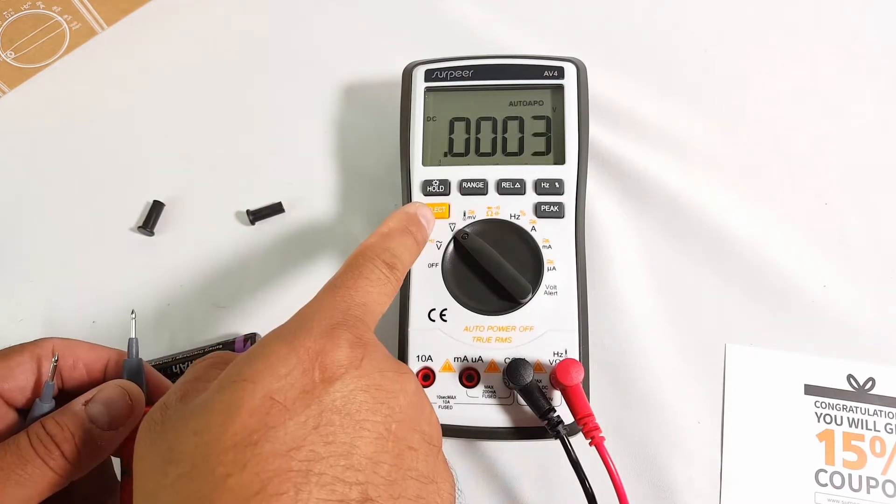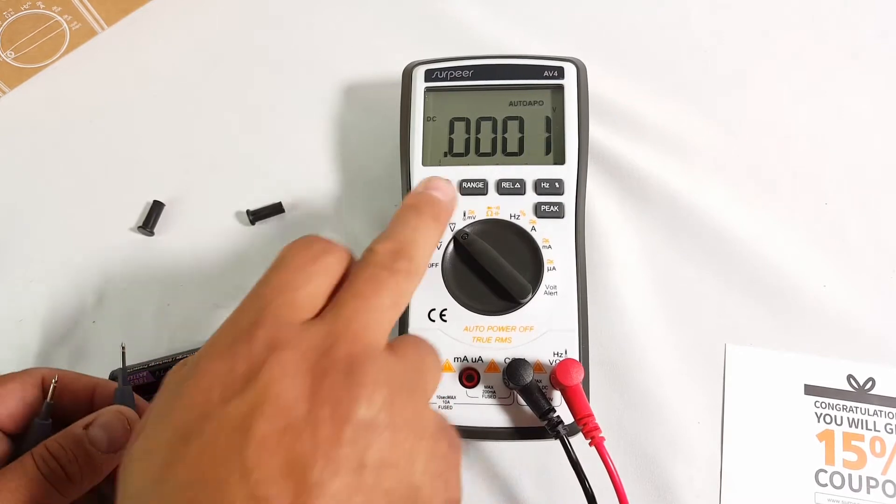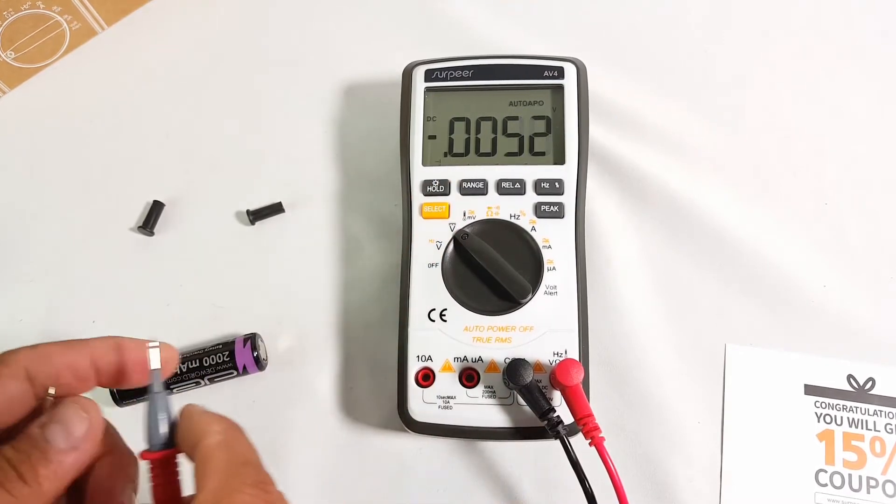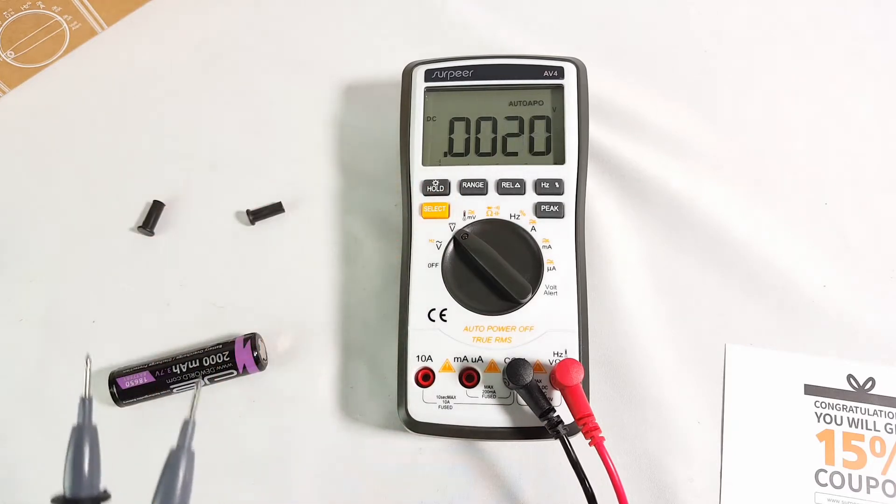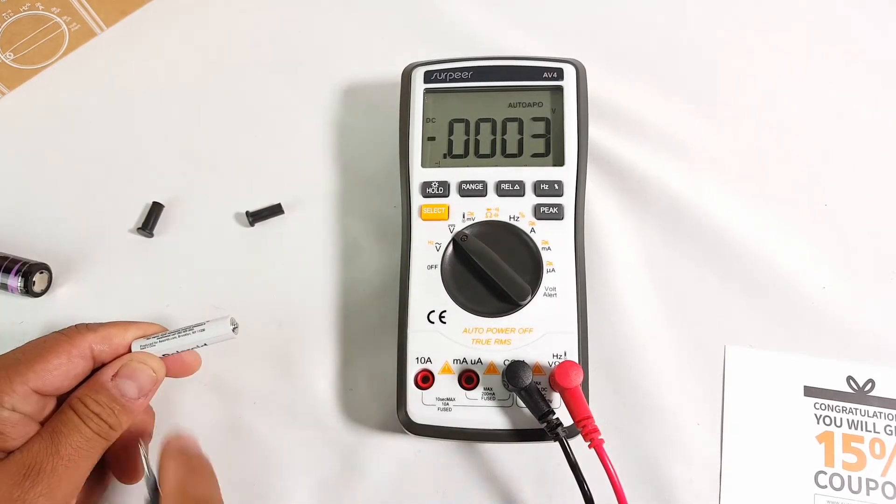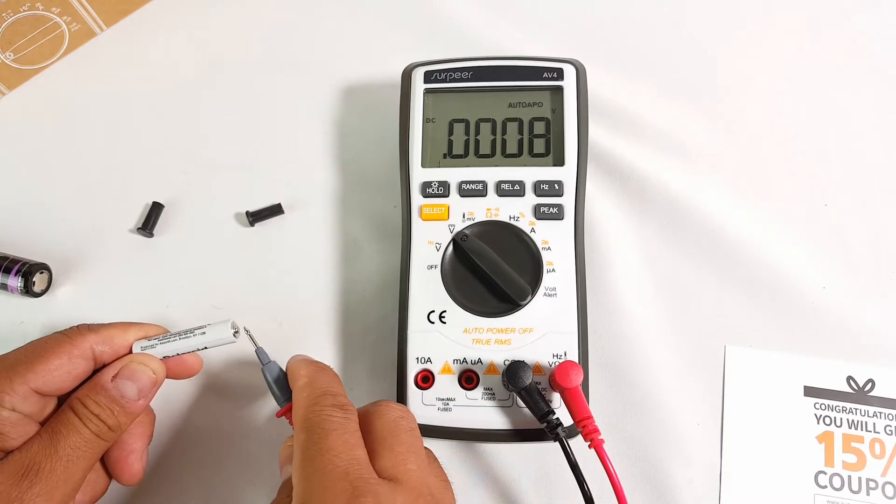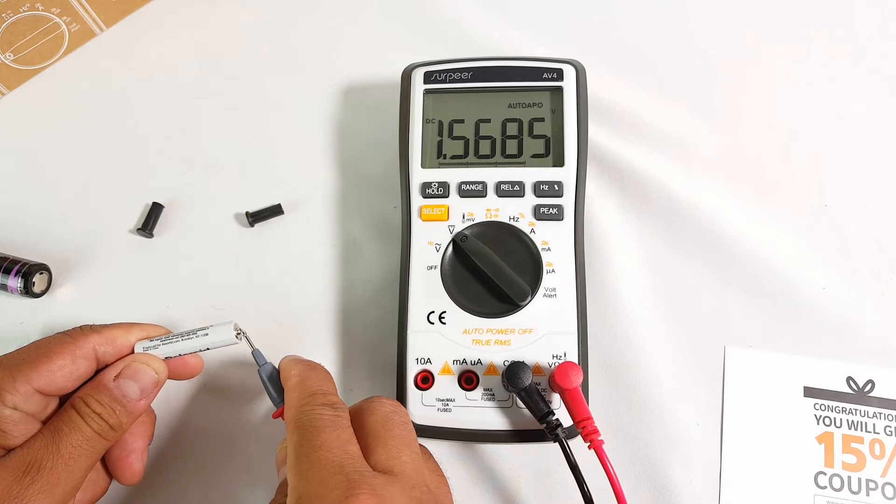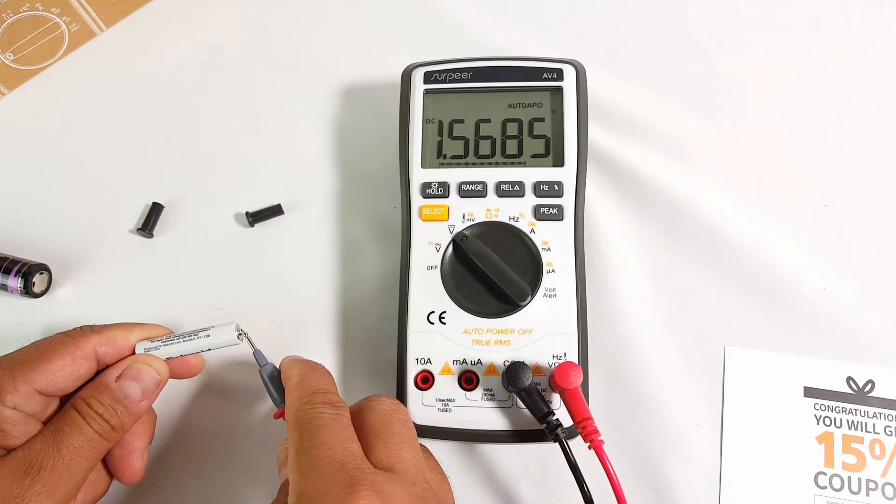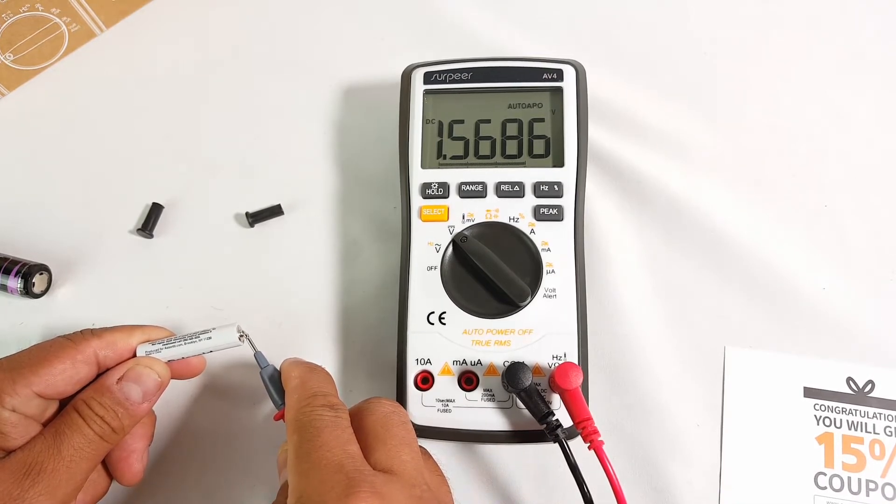You can press this button to select and change values on some of them, the range and all of that. I'm testing here a regular AAA battery, which should be 1.5. Yep, 1.5685. So this one comes very well charged.